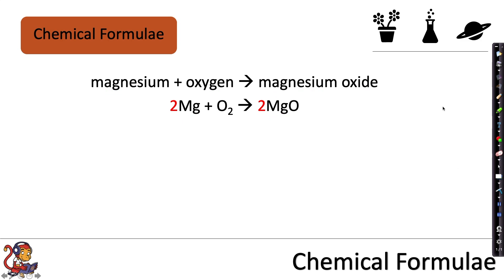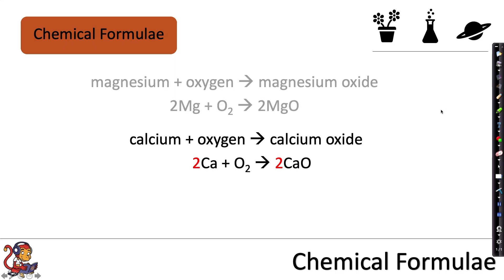In another example, you can see that calcium plus oxygen would make calcium oxide and we can write this in terms of its chemical formulae. And a final example, iron plus chlorine would make iron chloride. So as a symbol equation, we can write it out using its chemical formulae.